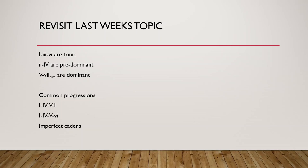Last week was all about chord functions. We have tonic chords where the music is stable, dominant chords where there is a lot of tension, and pre-dominant chords which are in-between. A tonic chord is where the music always wants to resolve to. The 1, 3, and 5 diatonic triads in a major scale are tonic functions, the 2 and 4 are pre-dominant, and the 5th and 7th are dominant functions.